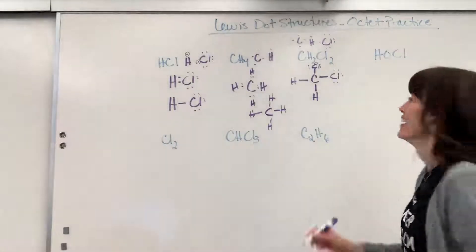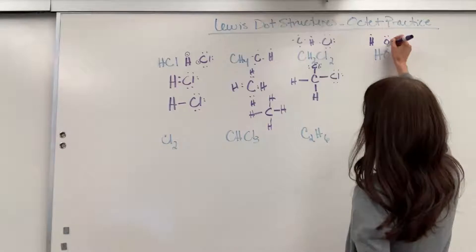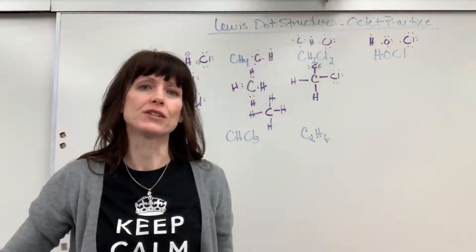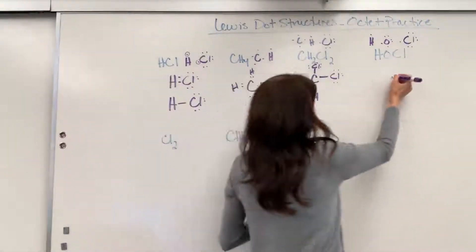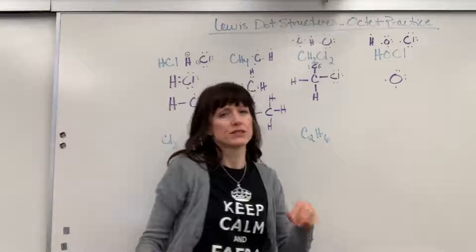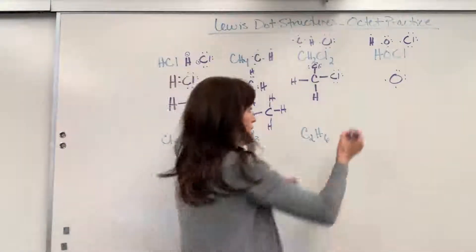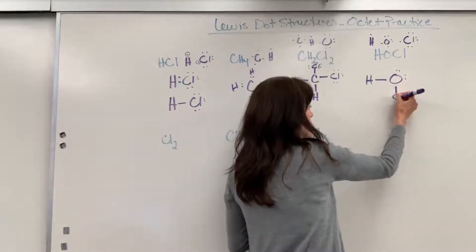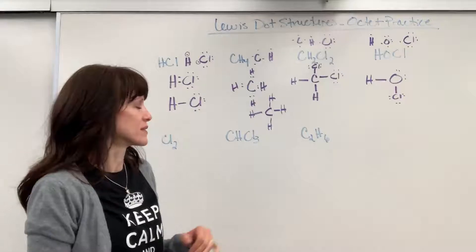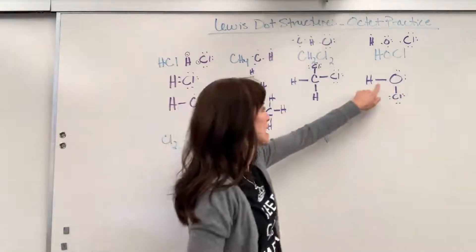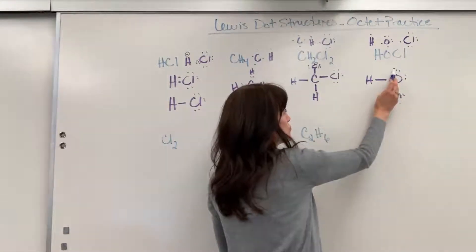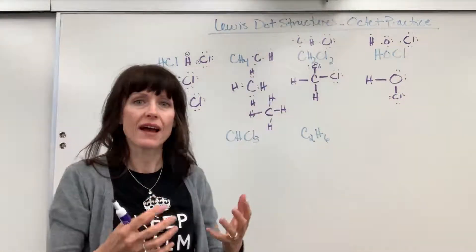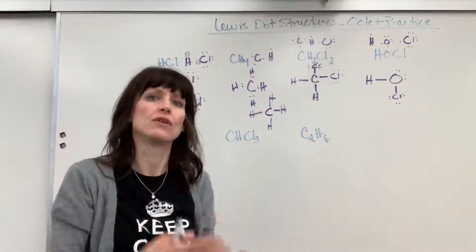Now let's look at HOCl. Hydrogen has one valence electron, oxygen has six valence electrons, and chlorine has seven. The central atom will be oxygen because it has the fewest valence electrons. Oxygen needs two more electrons, so hydrogen shares one electron and chlorine shares one electron. The chlorine then has its three lone pairs. Checking: hydrogen senses two electrons — perfect. Oxygen senses two, four, six, eight — perfect. Chlorine senses two, four, six, eight — excellent. Everything has the sense of a full shell through sharing.